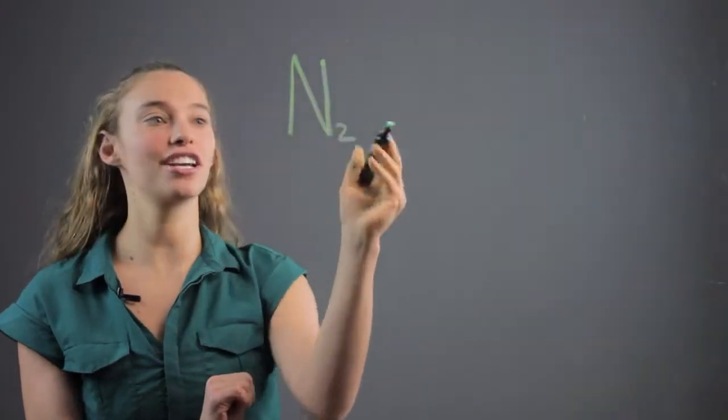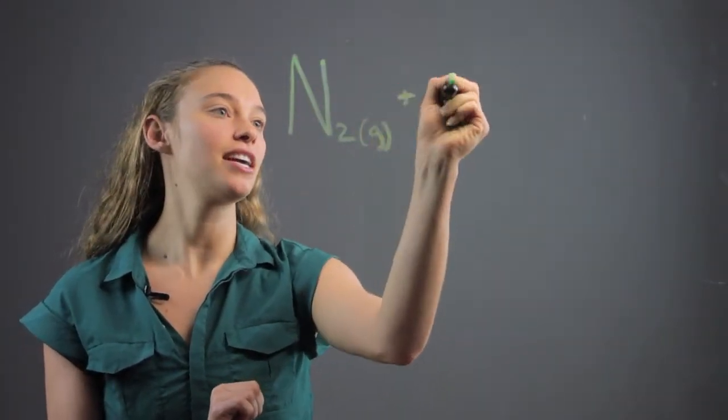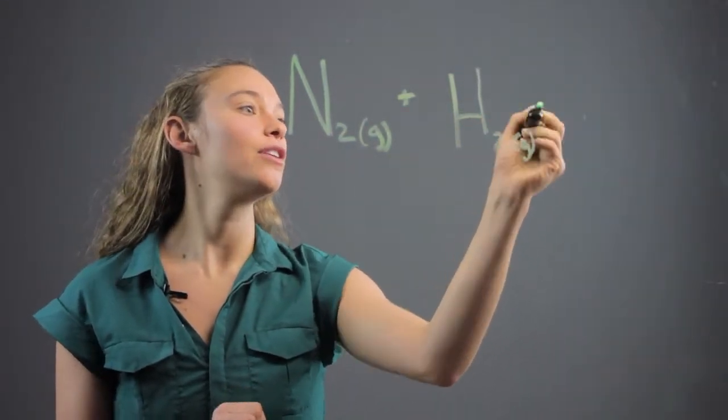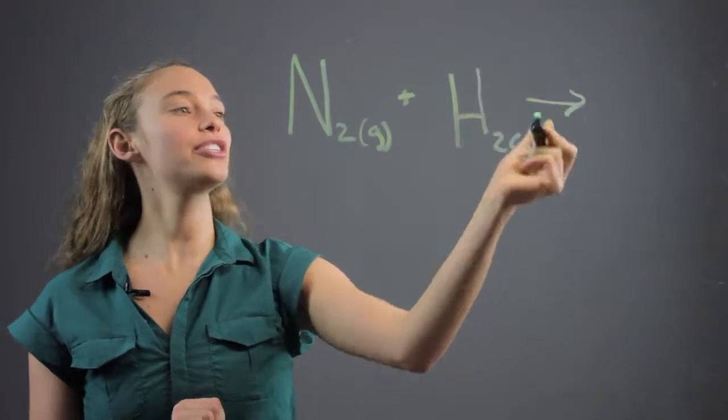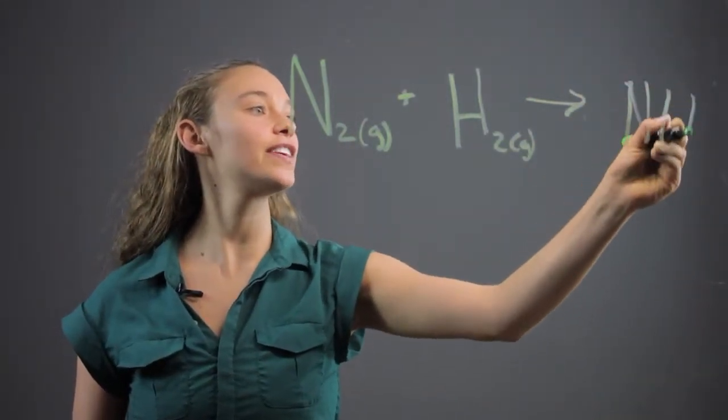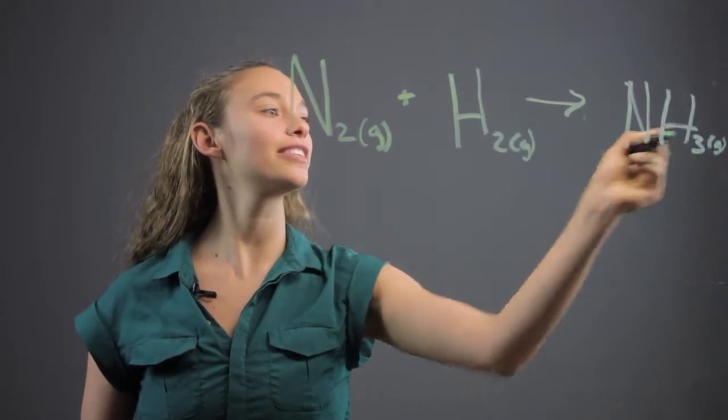Here we have nitrogen, which is a gas, plus hydrogen, which is also a gas. And then we do an arrow to show the reactants, and nitrogen and hydrogen can give us ammonium, which is also a gas.